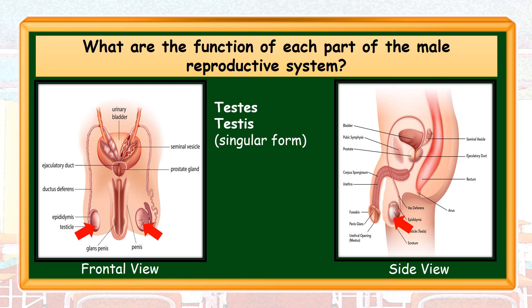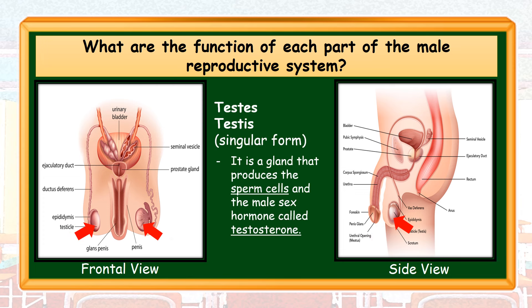Testes (singular: testis) — it is a gland that produces the sperm cells and the male sex hormone called testosterone. Sperm cells are the male reproductive cells, while testosterone is responsible for male secondary characteristics such as deepening of voice and development of pubic hair in the private area.